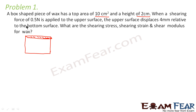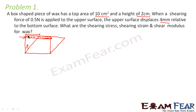When a shearing force of 0.5 Newton is applied to the upper surface, the upper surface displaces 4 millimeters relative to the bottom surface. So it gets displaced by some angle theta and this distance — that is 4 millimeters. We have to find out the shearing stress, shearing strain, and shear modulus.